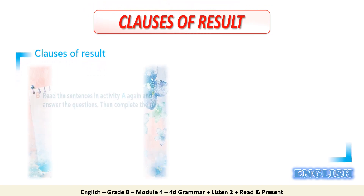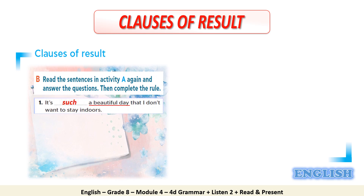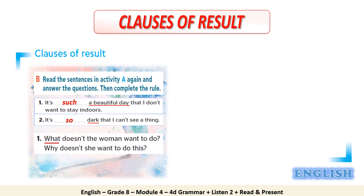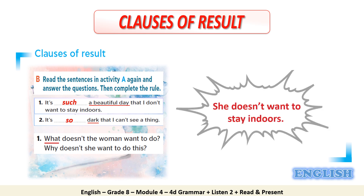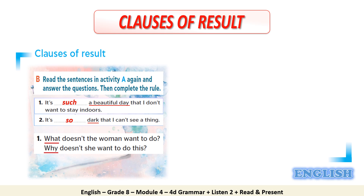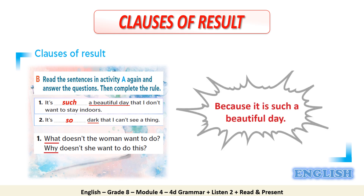Now read the sentences in Activity A again and answer the questions. It's such a beautiful day that I don't want to stay indoors. What doesn't the woman want to do? She doesn't want to stay indoors. Why doesn't she want to do this? Because it's such a beautiful day. So it's such a beautiful day that, as a result, the woman doesn't want to stay indoors. We have a cause and an effect here. The cause is that it's such a beautiful day, and the effect is that the woman doesn't want to stay indoors.